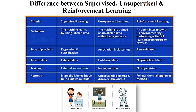Now the last topic is the difference between supervised, unsupervised, and reinforcement learning. In supervised learning, machine learning is performed using labeled data. In unsupervised learning, the machine is trained using unlabeled data without any guidance. In reinforcement learning, the agent interacts with the environment by performing actions. Supervised learning has two problem types: regression and classification. Unsupervised learning has association and clustering. Reinforcement learning is reward-based. In terms of data type: supervised uses labeled data, unsupervised uses unlabeled data, and reinforcement learning uses no predefined data.